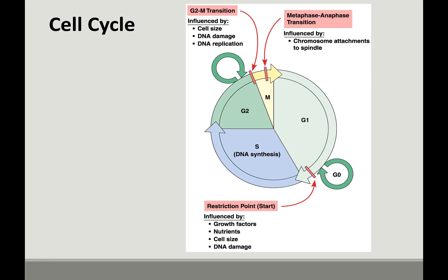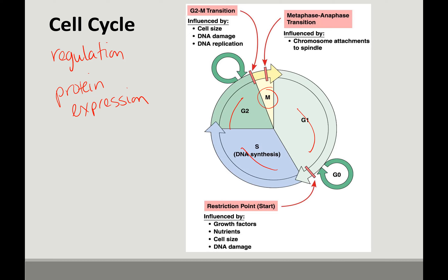That covers the physical things that happen to chromosomes and cells during cell division. Controlling the growth, DNA synthesis, further growth, and the final division is all about protein expression. We'll stop here and start again in the next video.